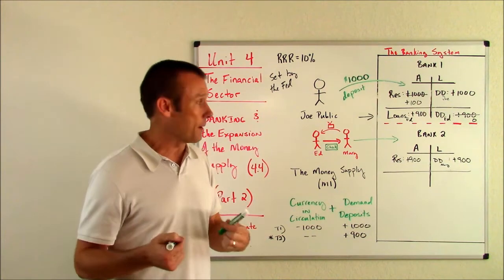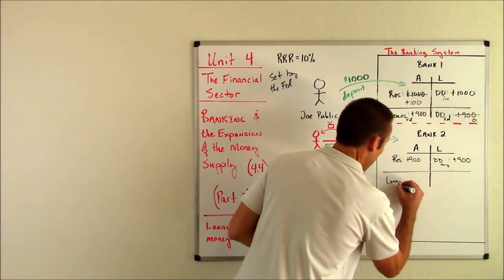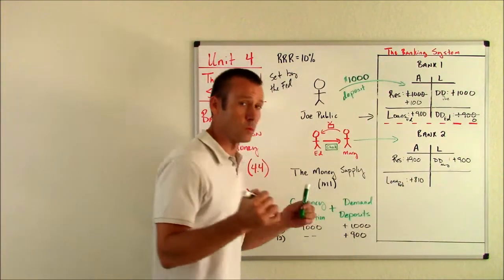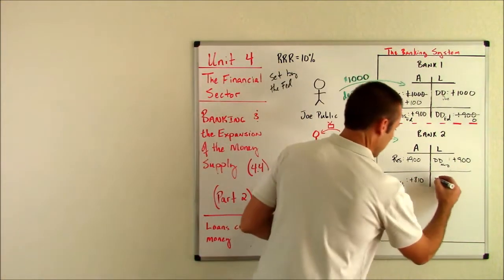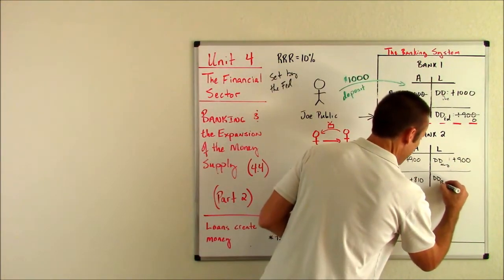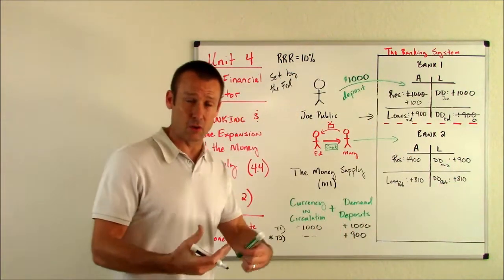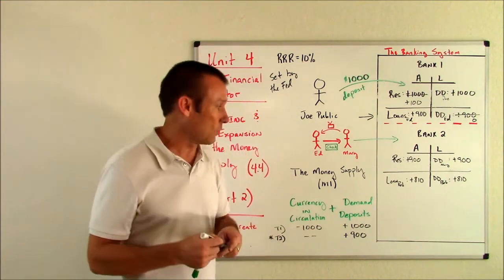So guess what? Bob walks into bank two and Bob takes out a loan for $810. And when he takes out that loan, his checking account is going to get credited. Demand deposit, Bob, 810. Of course, he goes in to get a loan. He's going to get access to money. That's what happens when you get a loan. You get access to money.